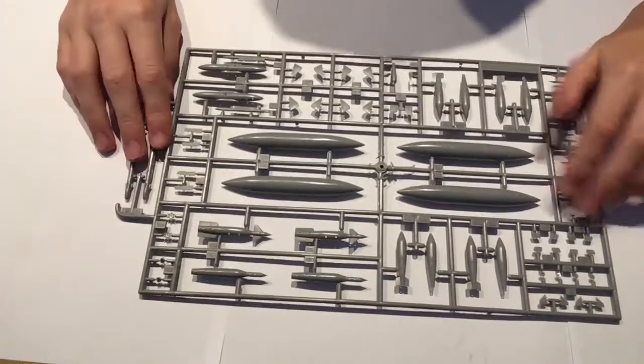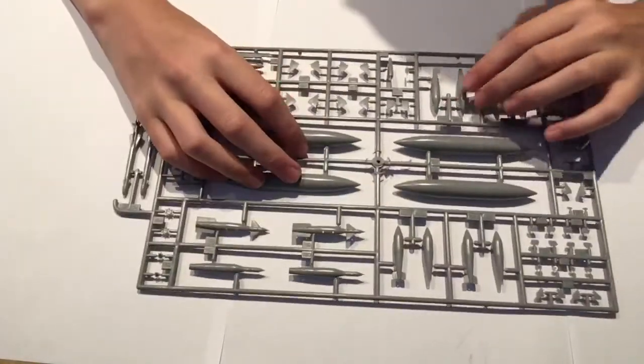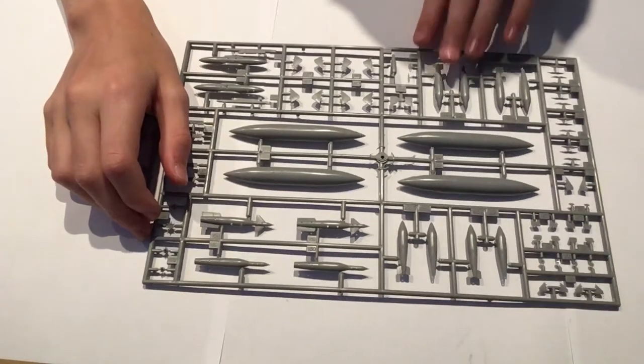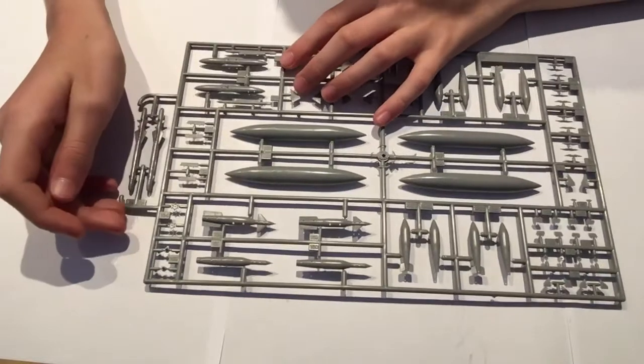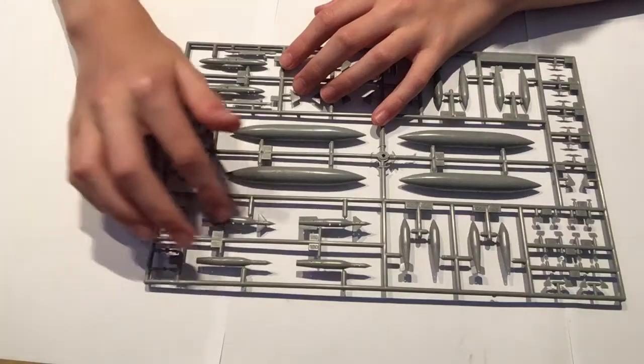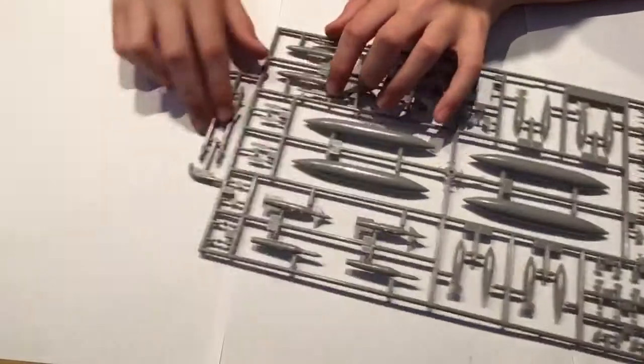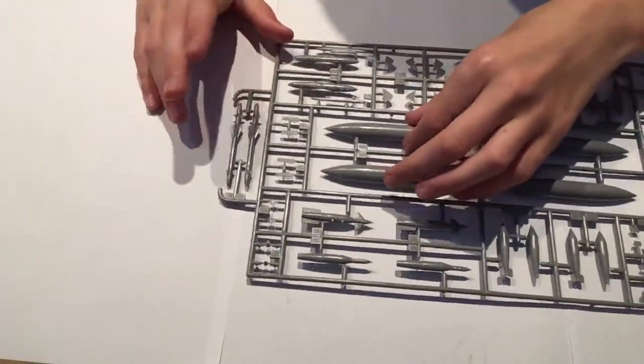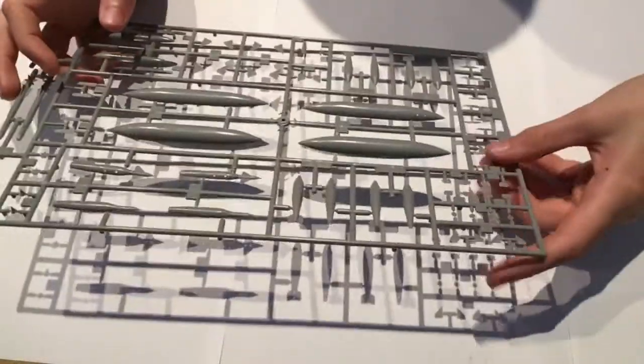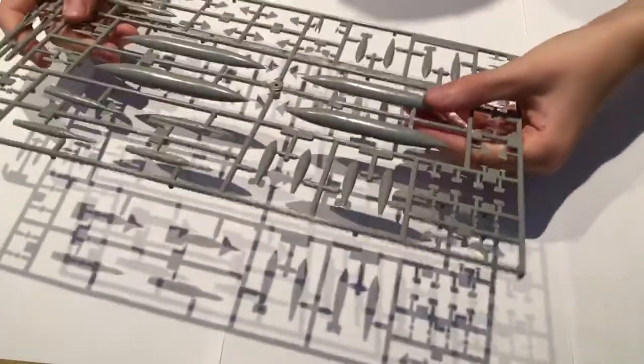Here we have on the final sprue two long haul fuel tanks, four missiles with their tails separate which I really hate. I was about to say the Paveways but they're not. Don't know what they are, I will look into that. Then you've got two nice missiles which I have no clue what they are, sidewinders probably, lock-on missiles from what they look like. Some lovely bombs and missiles there, quite nice.